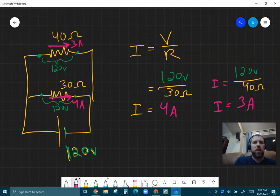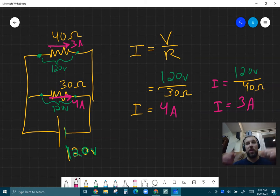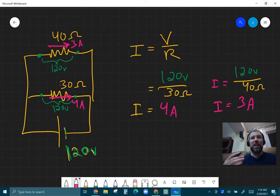The current, the branch with the higher resistance had a lower current. Shocker, not really. That's Ohm's law. That's what it tells us. If there's more resistance, it's limiting the flow. That's literally what it's resisting.